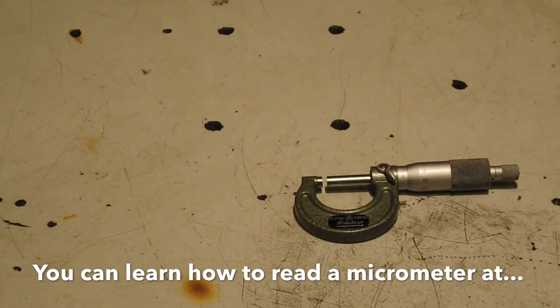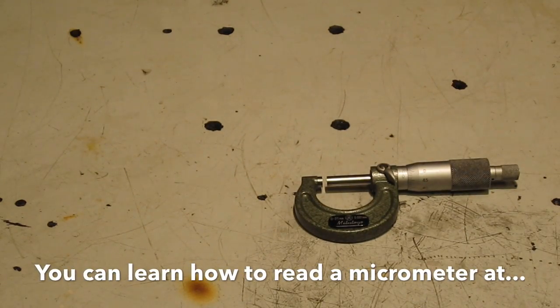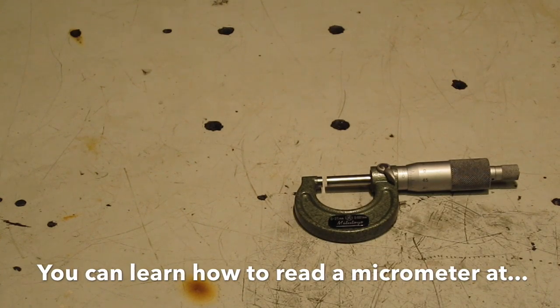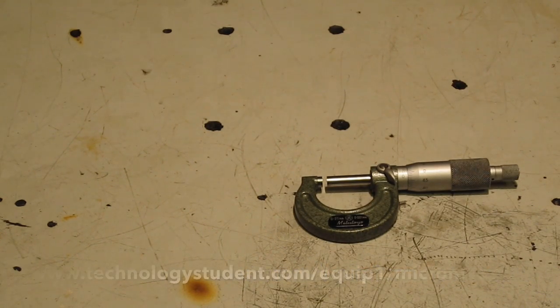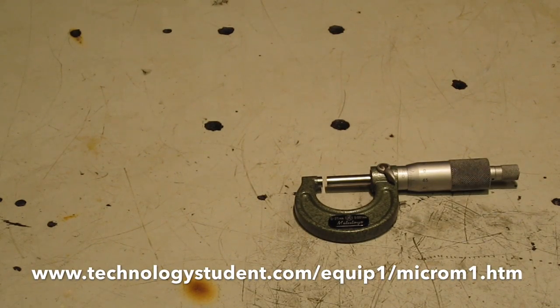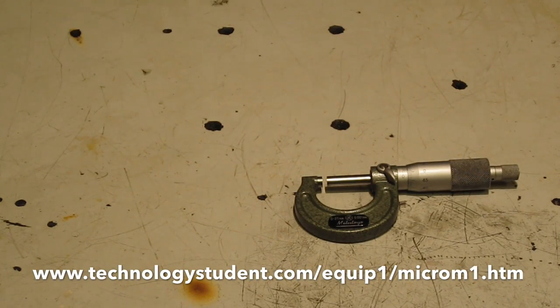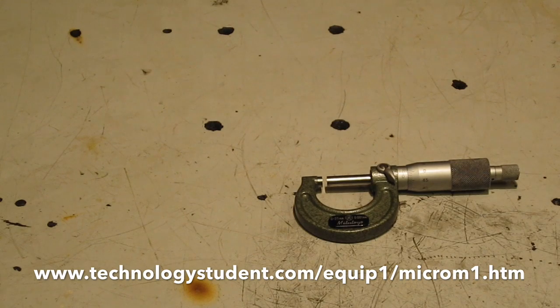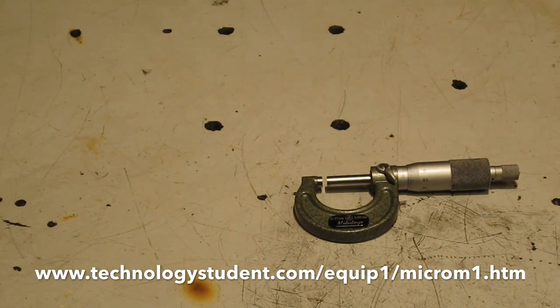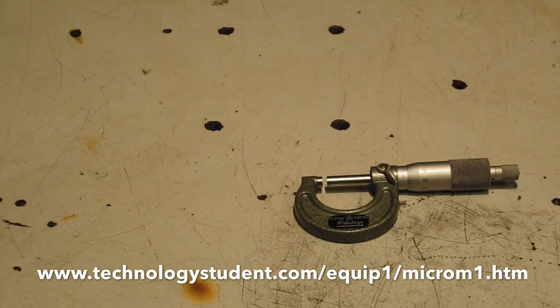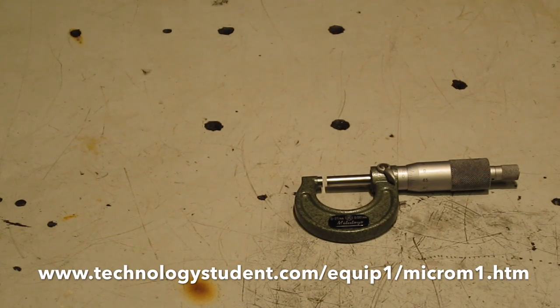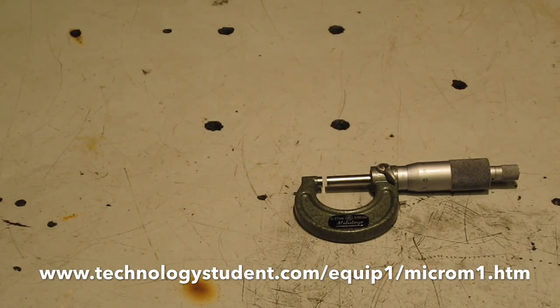This is a 0-25mm micrometer, and you'll need that for measuring your shims accurately. Don't rely on the supplier of the shims for them to be what they say they are. Experience has taught me that you should always measure the shims and make a note of exactly the size you're using.